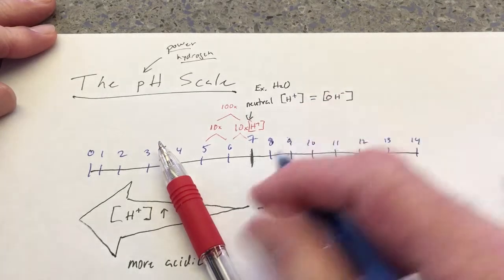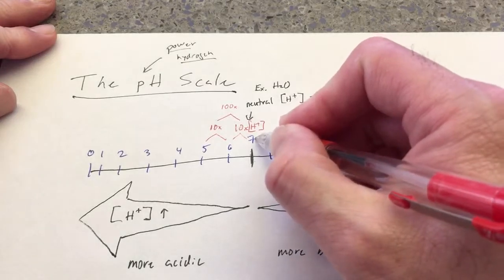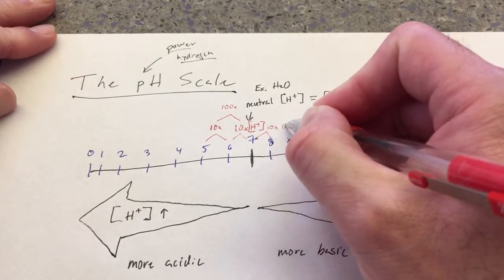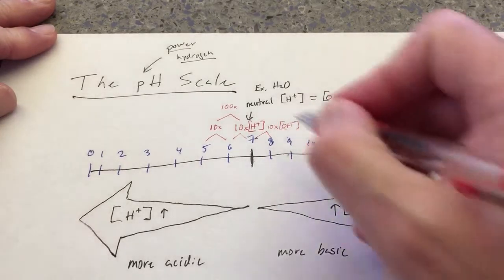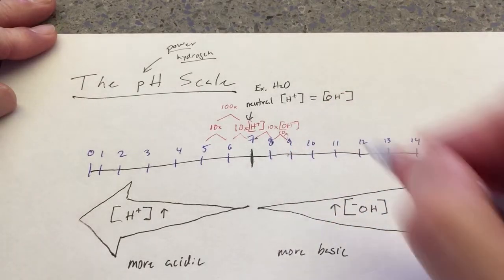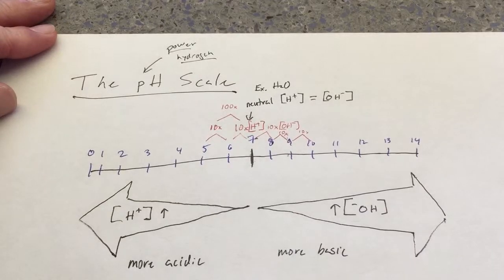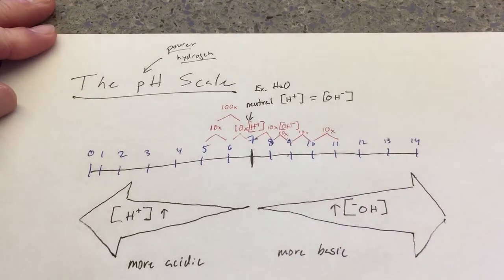Now, same thing is true for hydroxide ions. From 7 to 8, there's a 10 times difference in the hydroxide ion concentration. From 8 to 9, there's a tenfold difference. From 9 to 10, a tenfold difference. From 10 to 11, a tenfold difference.